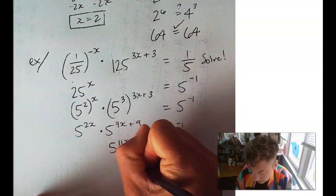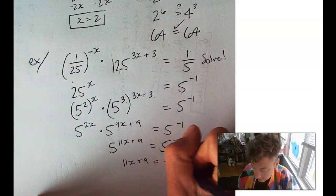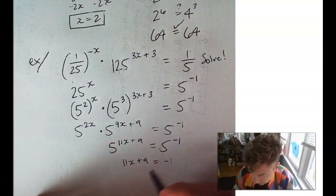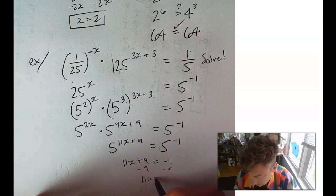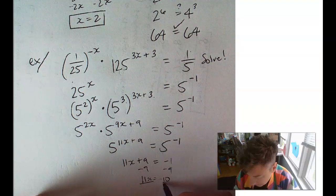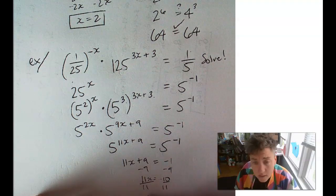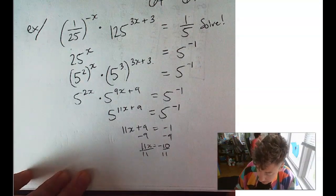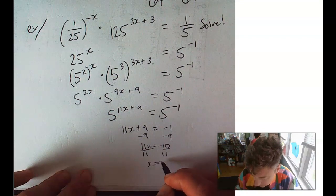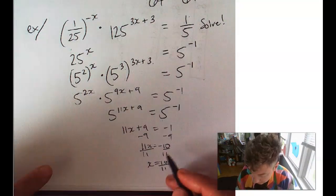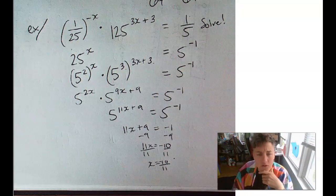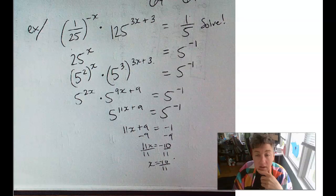Now, we get 11x plus 9 equals negative 1. Subtract 9 from both sides. We'll get 11x equals negative 10 divided by 11. x equals negative 10 over 11. Wow. Let's go check this out on the internet, shall we? Alright.